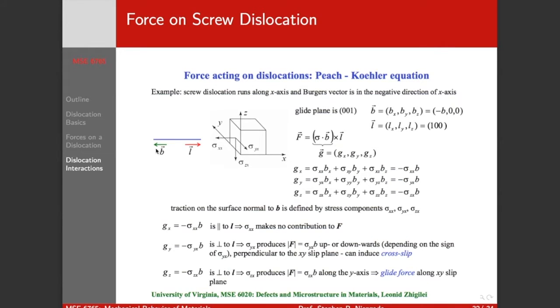If we do the same thing with the screw, here we have a line direction going this way with a Burgers vector along the negative x-axis and line direction along the positive x-axis. So zx shear, that component of stress causes our glide force. Shear in the yx plane causes a tendency to induce cross-slip, to move from one primary slip plane to a secondary slip plane. The normal xx component gives us no force. Forces along the dislocation line make no contribution.